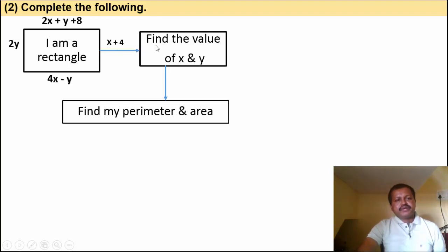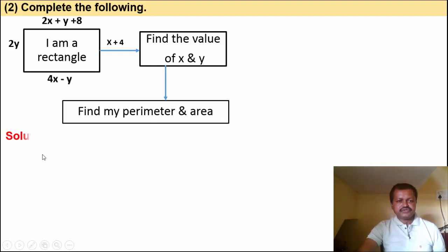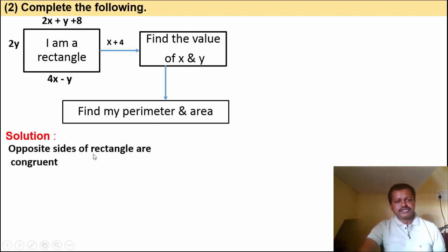Find the value of x and y, and also find the perimeter and area of the rectangle. Solution: We know that opposite sides of a rectangle are congruent (equal).